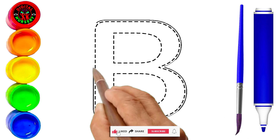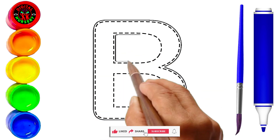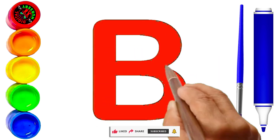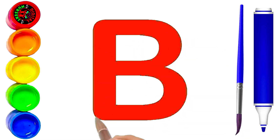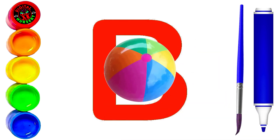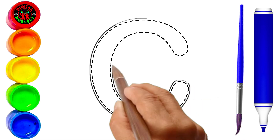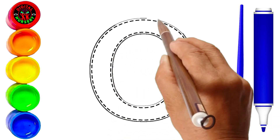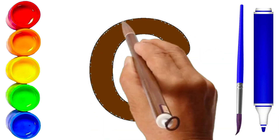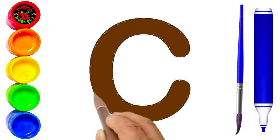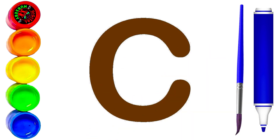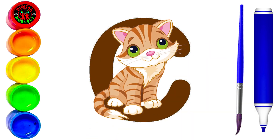B. We are tracing capital B letter by red color. Yes, red color of capital B. Great. Yes, B is for ball. C. We are tracing capital C letter by brown color. Yes, brown color of capital C. Wow, you are best. C is for cat.